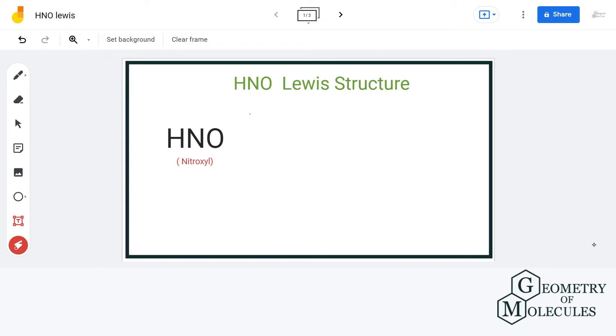Hi guys, welcome back to our channel. In this video, we are going to look at the Lewis structure of HNO molecule. It's the chemical formula of nitroxyl, also known as azinone. To determine its Lewis structure, we will count up the total number of valence electrons.